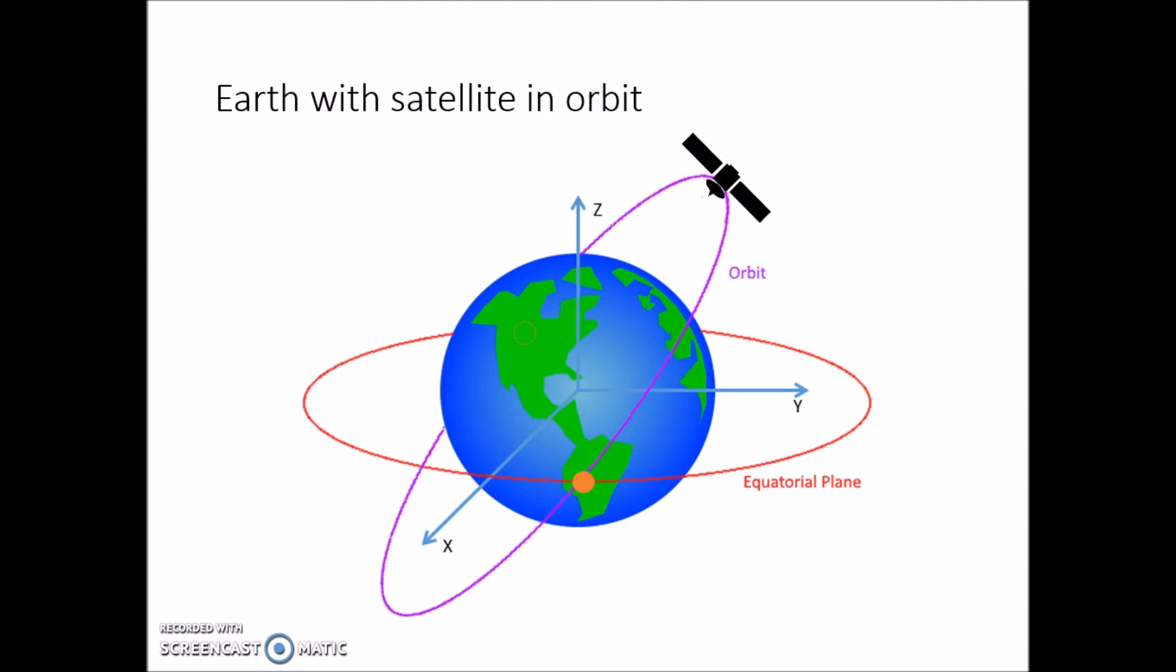The orbit of the satellite has to have a direction. The orbit would be going something like this. So, what is an ascending node? Well, it's in the name. As the satellite ascends, it creates the ascending node.